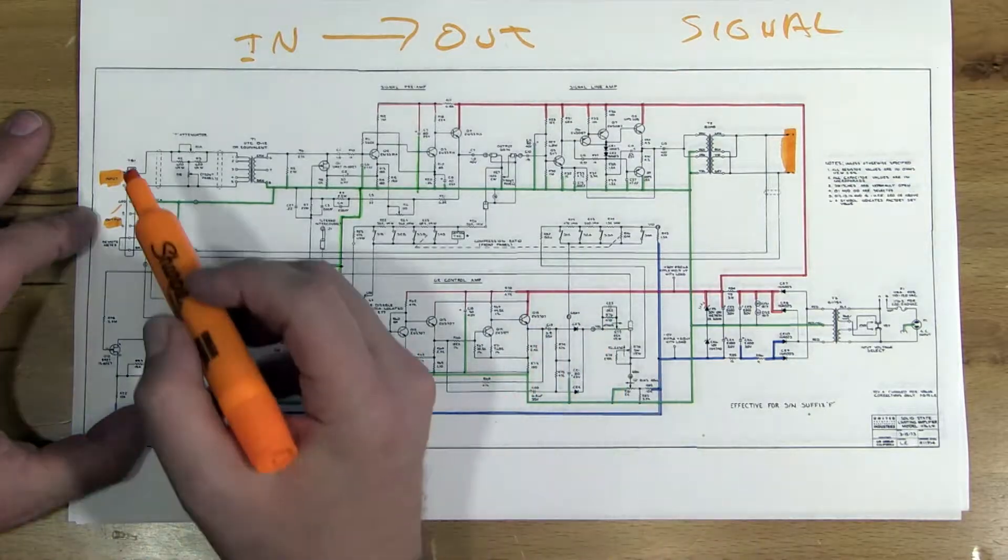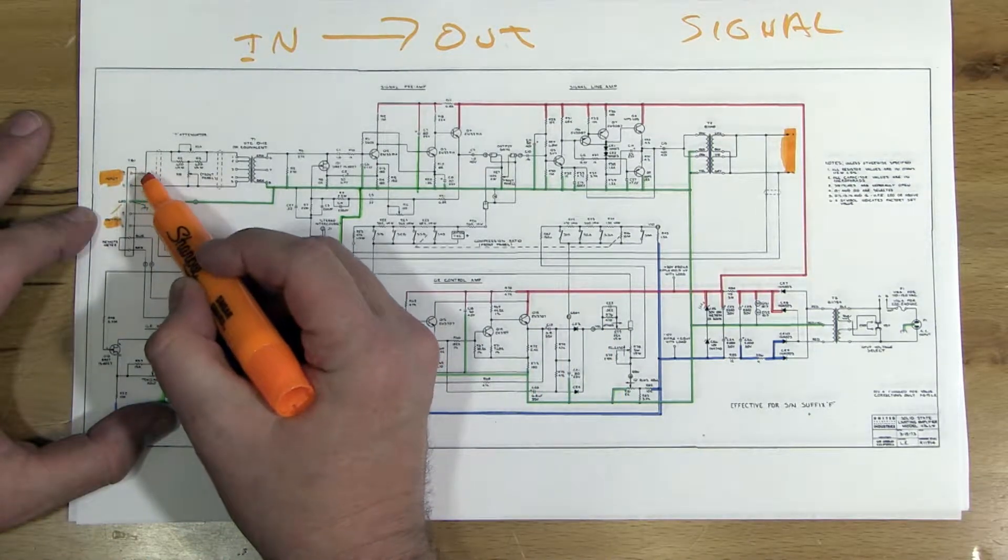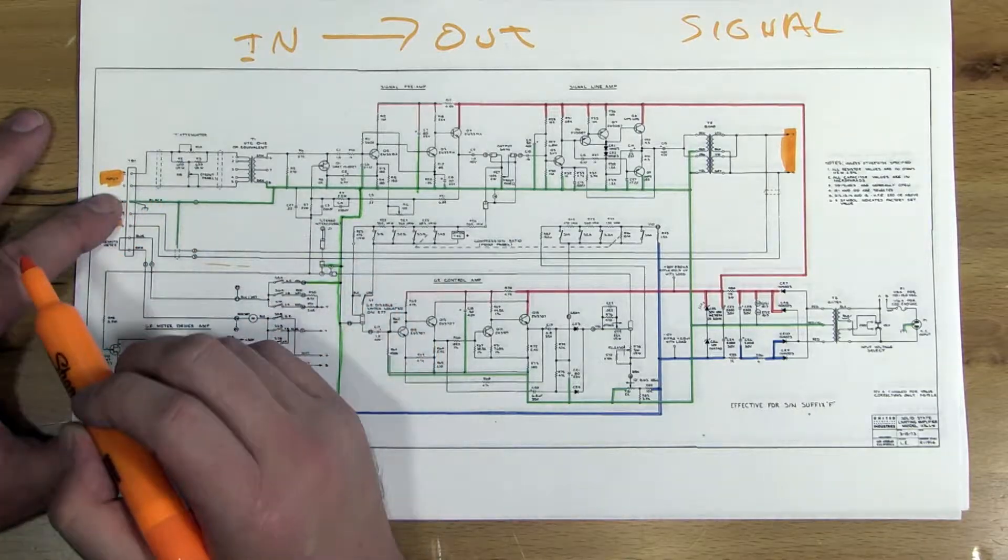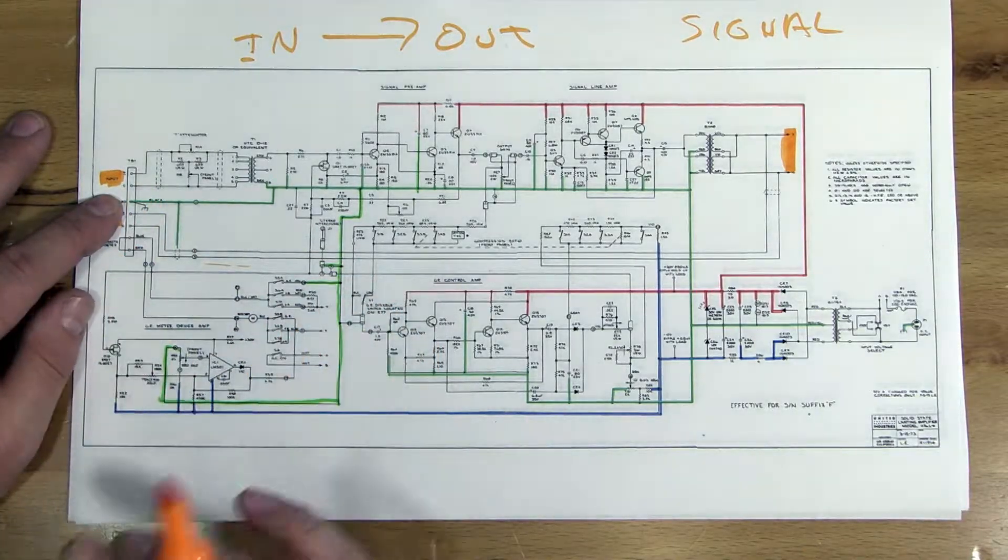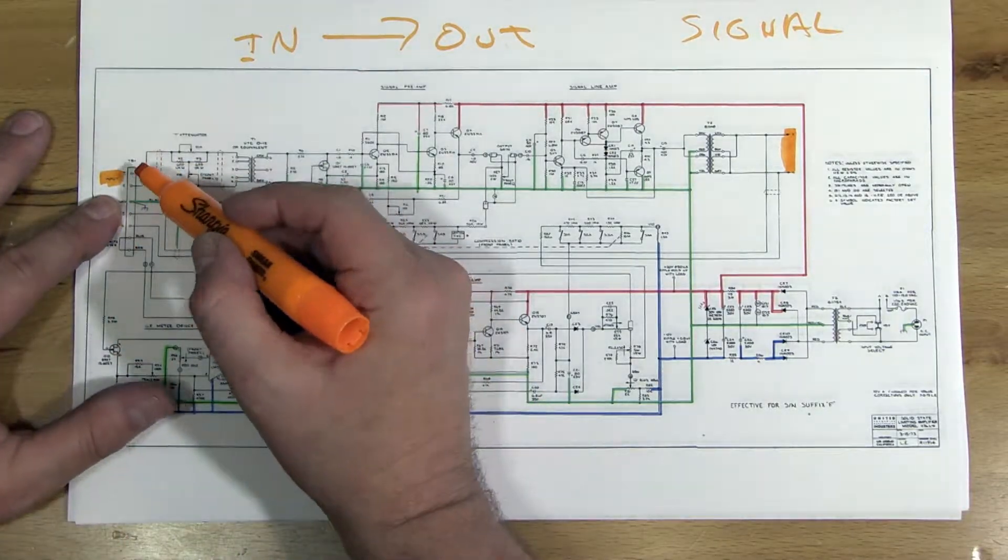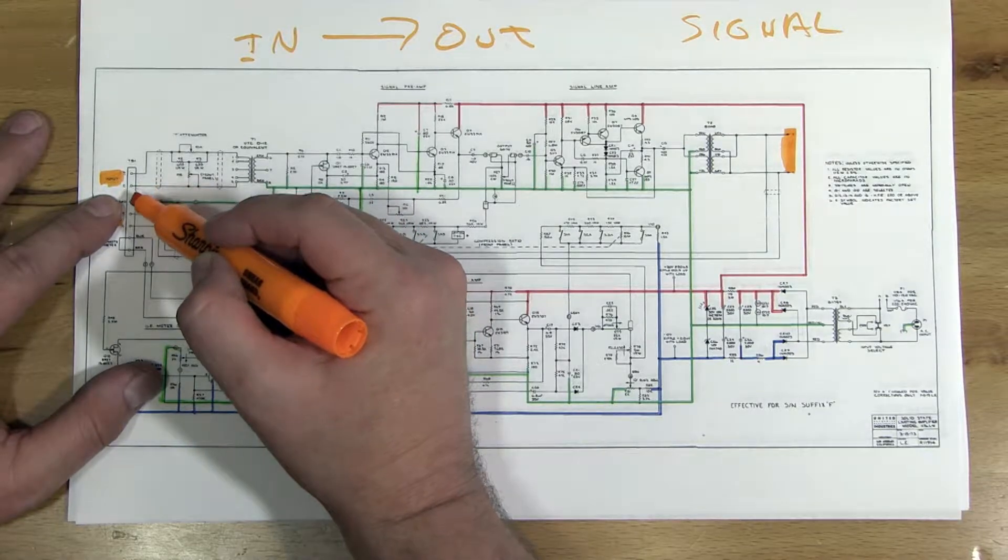Now this is a balanced device, so it has inputs in this case that are marked plus minus and C. So that's an older style of marking instead of hot and cold. Plus minus would be hot, common, or C would be cold.